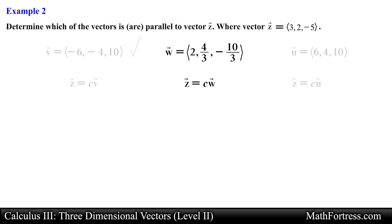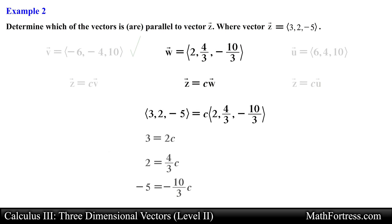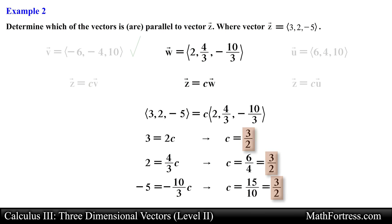For the second vector we do the same and break apart the vector equation into components and solve for c. Notice that every component has the same value for the scalar. This means that vector w is also parallel to vector z.